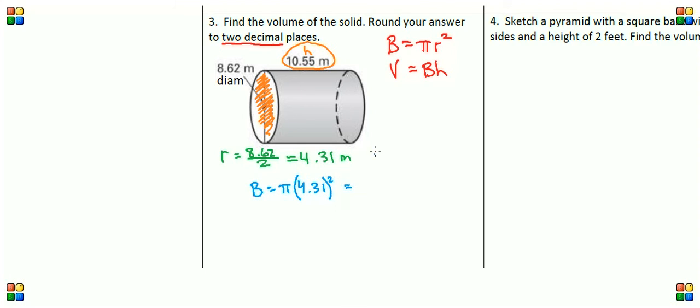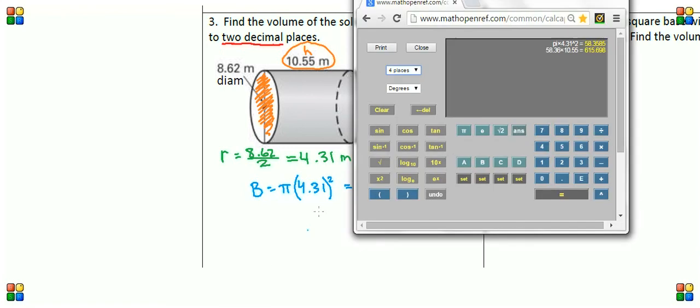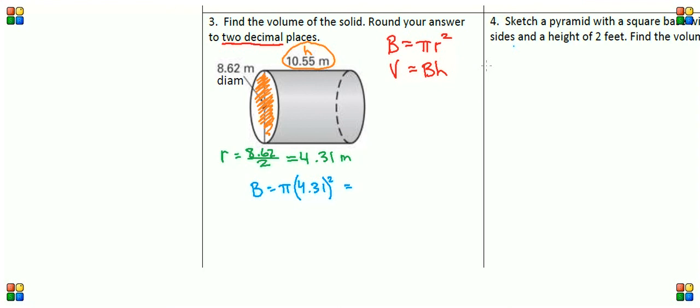Let's go ahead and put this in our calculator: pi times 4.31 squared. I have that already in my calculator. You can see pi times 4.31 squared is equal to 58.3585. Rounding to two decimal places, that is 58.36. So our base area is 58.36 meters squared.